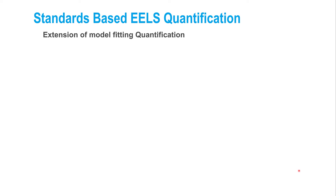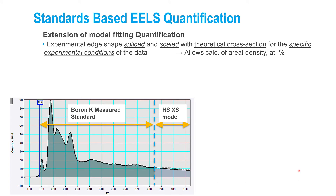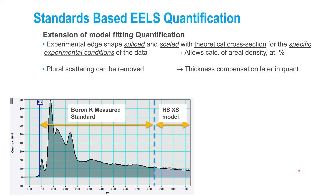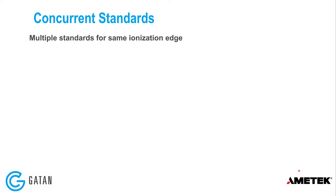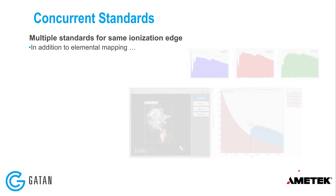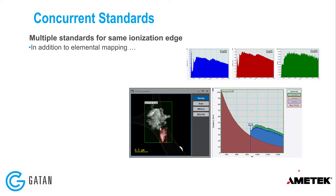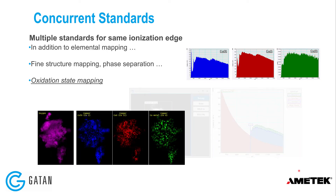Standards-based EELS quantification is essentially an extension of model fitting quantification. An experimental edge shape is spliced and scaled with a theoretical cross-section for the specific experimental conditions of the data, allowing calculation of analytical quantities like areal density and atomic concentration. Plural scattering can be removed for thickness compensation. Importantly, the ELNES region is now included in the quantification, which allows use of multiple standards for the same ionization edge, or a new method called concurrent standards. This enables not just elemental mapping, but also fine structure mapping, phase separation, and oxidation state mapping — the core technique of this work.